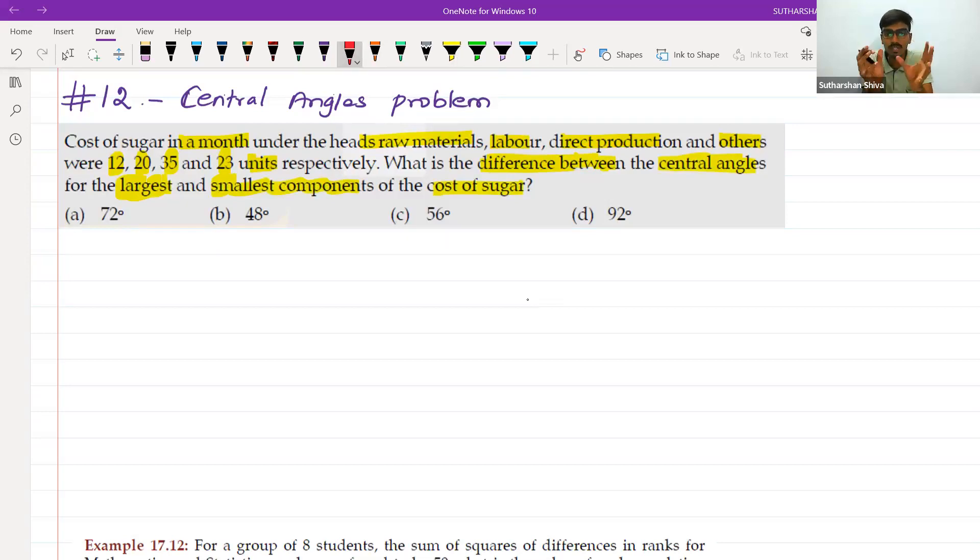Once you see central angle comes into the picture, it will be nothing but 360 degrees. A central angle means it's a circle. They simply try to frame a question based on pie diagrammatic question. They are asking the largest component. They are asking the smallest component.